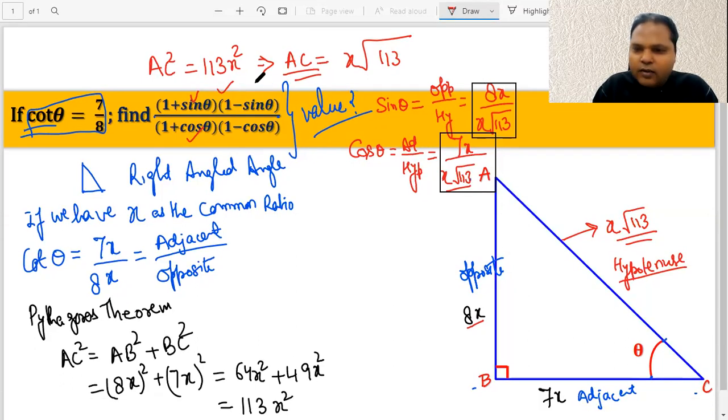Now before we put these values, we will also simplify it. If you clearly observe, the numerator here is in the form of (a + b)(a - b), and similarly the denominator is also in the same form (a + b)(a - b). So what I can simplify this whole thing as is (1 - sin²θ) over (1 - cos²θ).